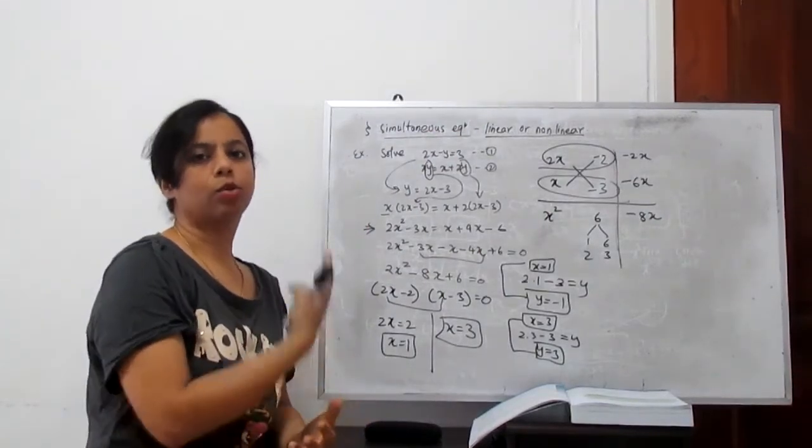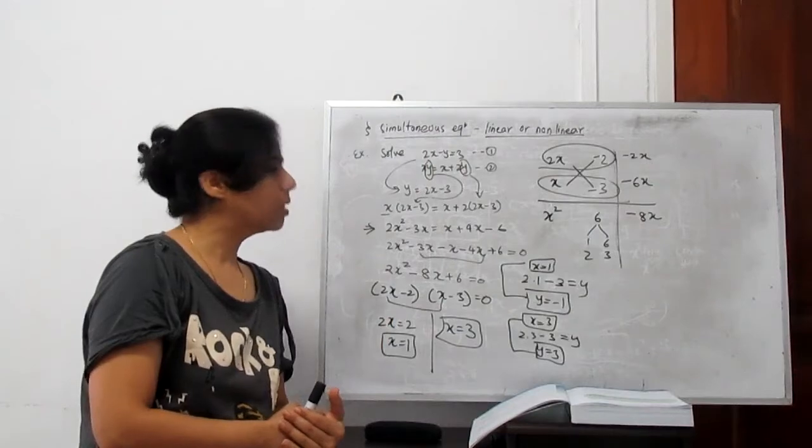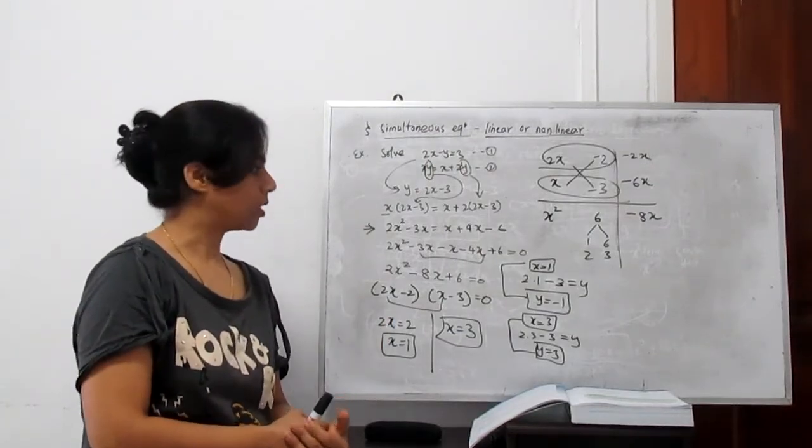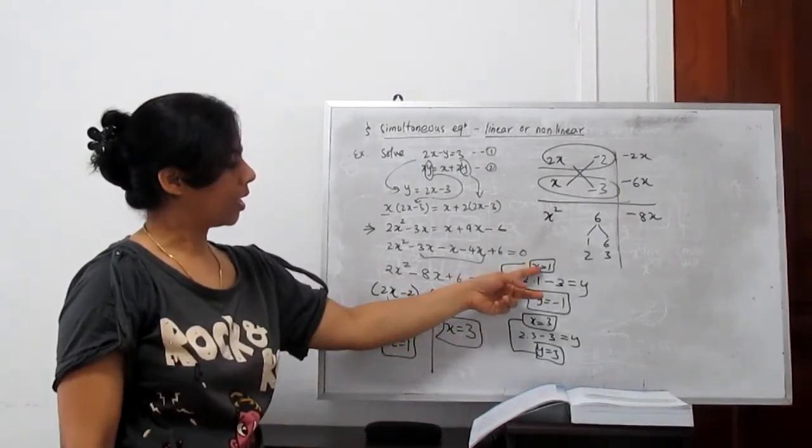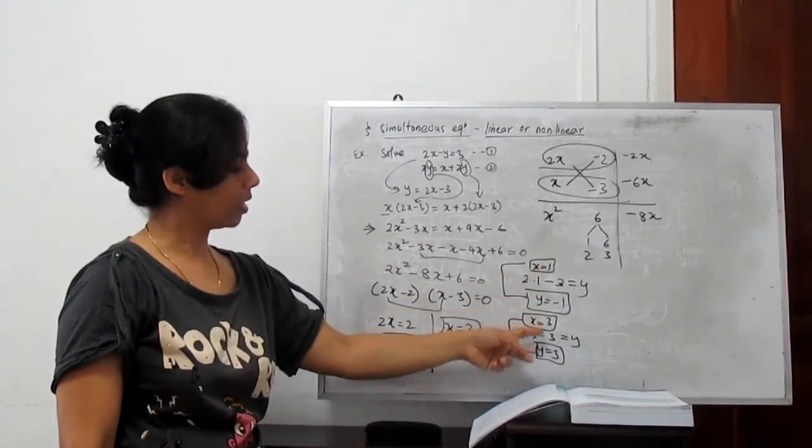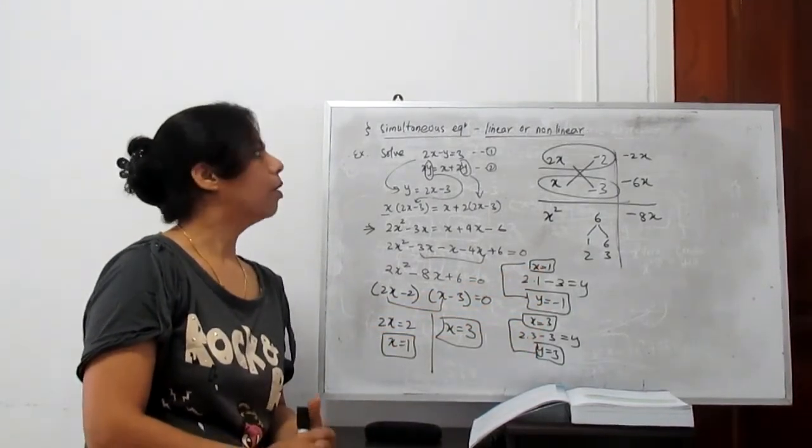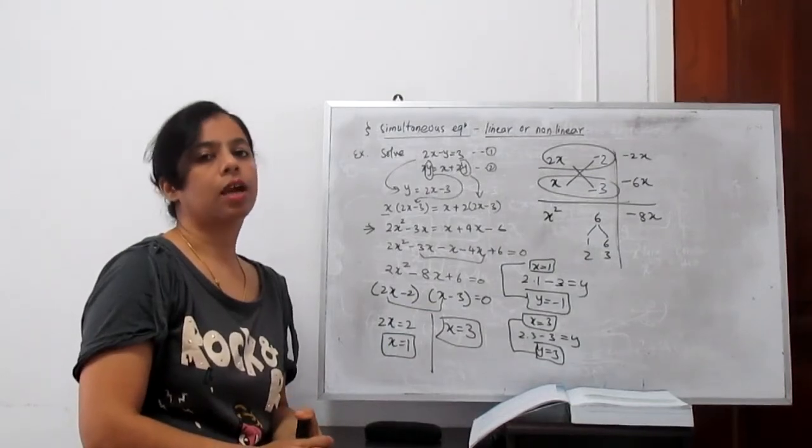If you get the x, you can find the pair of y. So this also we can say the point of intersection. Means this is (1, -1) and (3, 3). This is the point of intersection for both the equations where they cut in the coordinate.